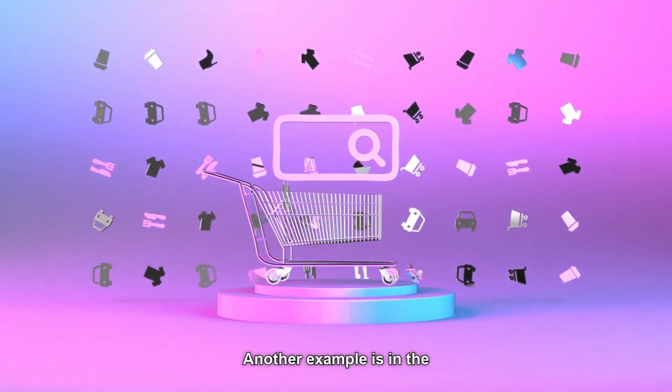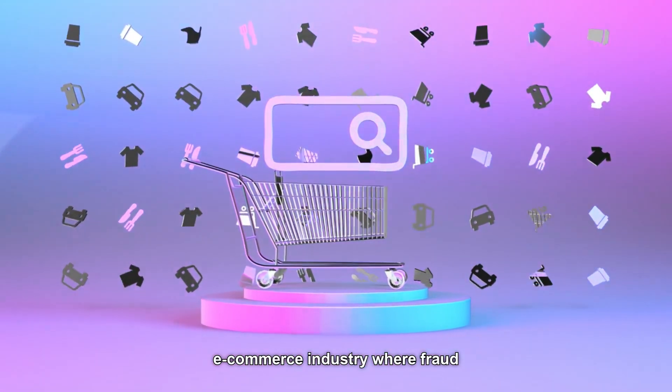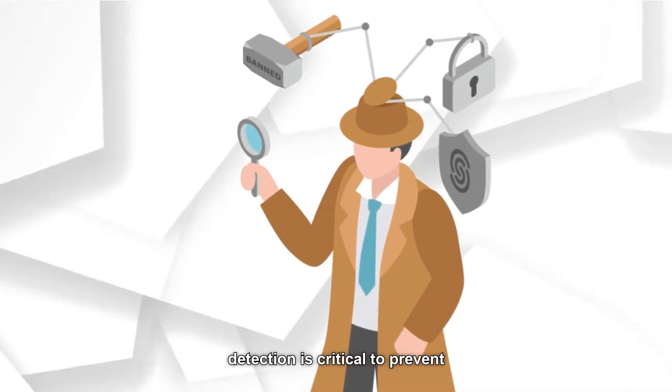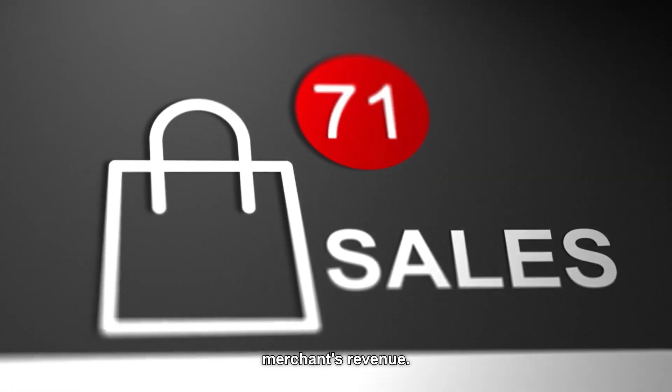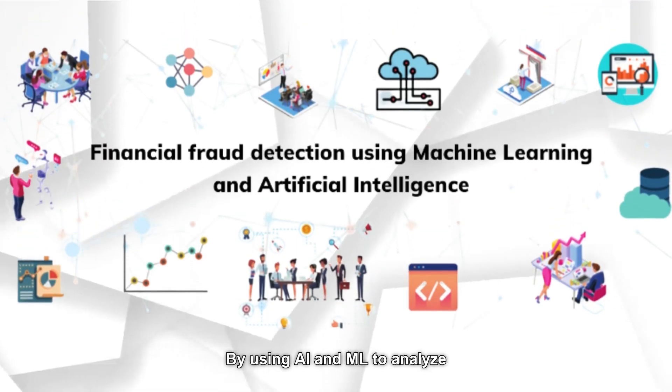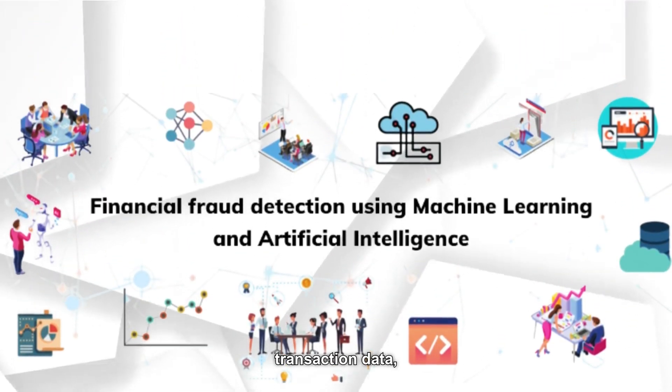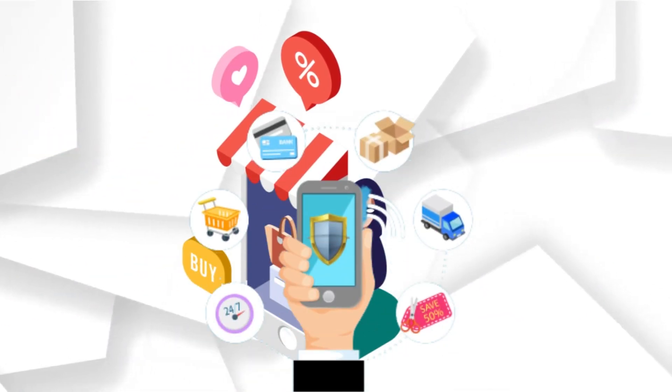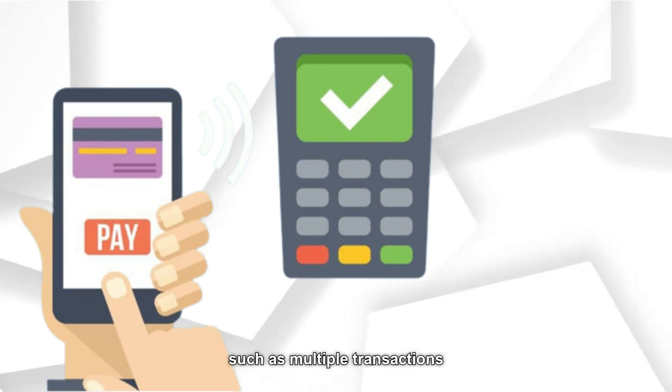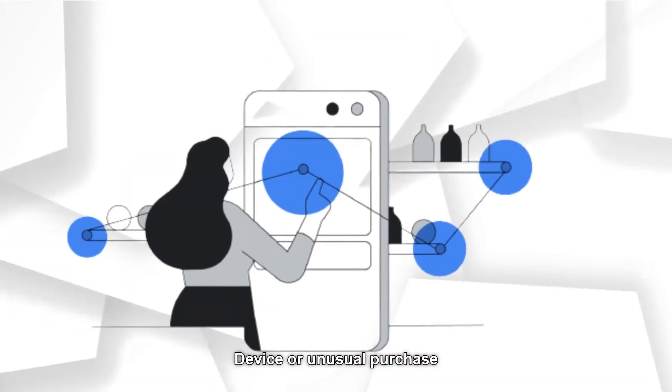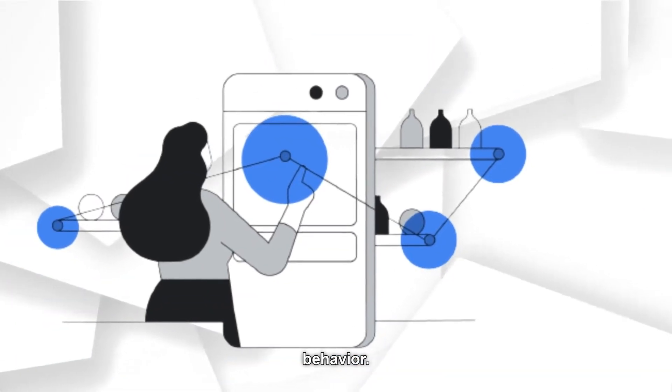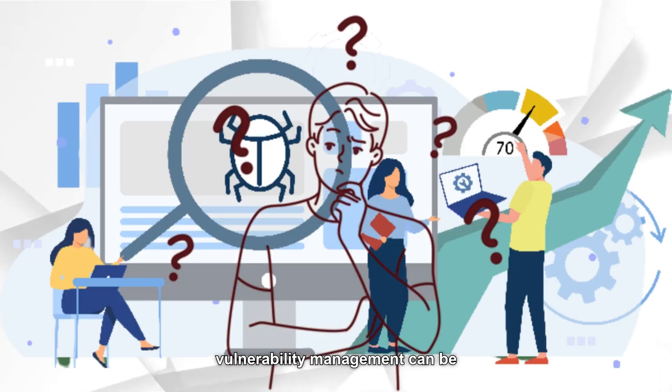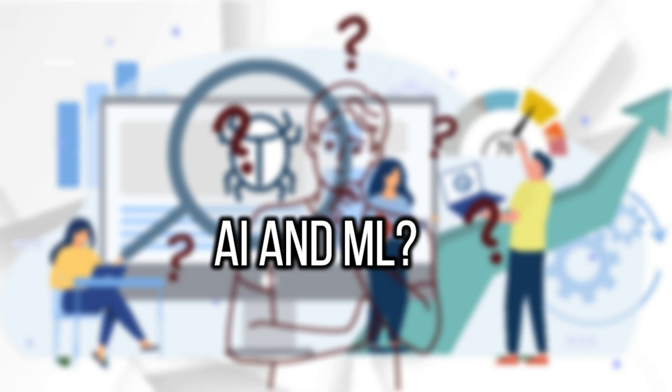Another example is in the e-commerce industry, where fraud detection is critical to prevent chargebacks and protect the merchant's revenue. By using AI and ML to analyze transaction data, merchants can detect patterns that may indicate fraudulent activity such as multiple transactions from the same device or unusual purchase behavior.